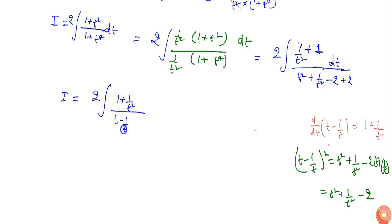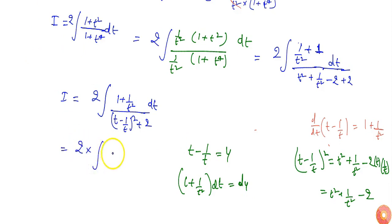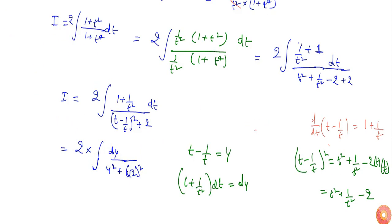Now using substitution, let t minus 1 by t equals y, then I get 1 plus 1 by t² dt equals dy. Substituting in the question I get 2 times dy by y² plus, which I can write as (root 2)².